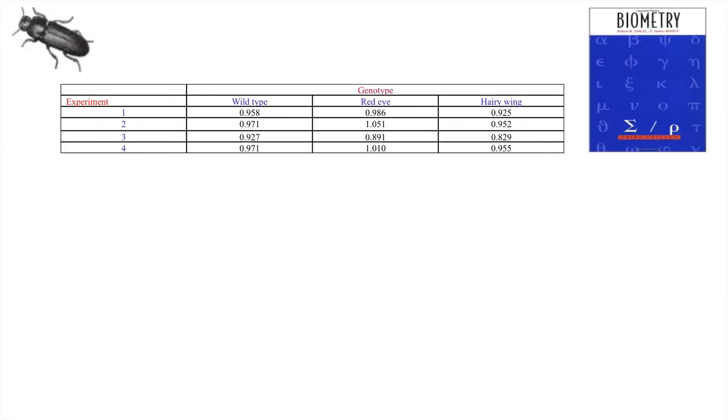Let's have a look at these data which come from Sokol and Rolfe's biometry. The data refer to the mean weights of tribolium beetles of different genotypes. We have wild type, red eye and hairy wing grown in standard conditions. Now this experiment was actually repeated four times so we have experiment as a block and we are primarily interested in the differences between the weights of these different genotypes in our experiment.